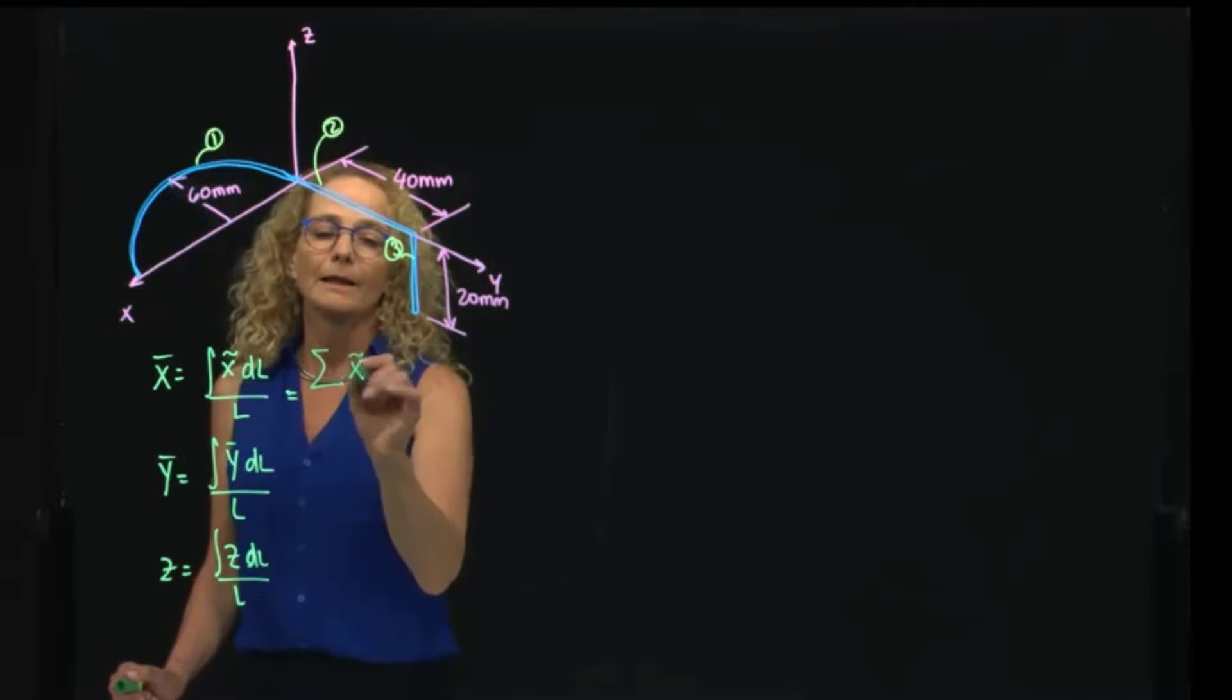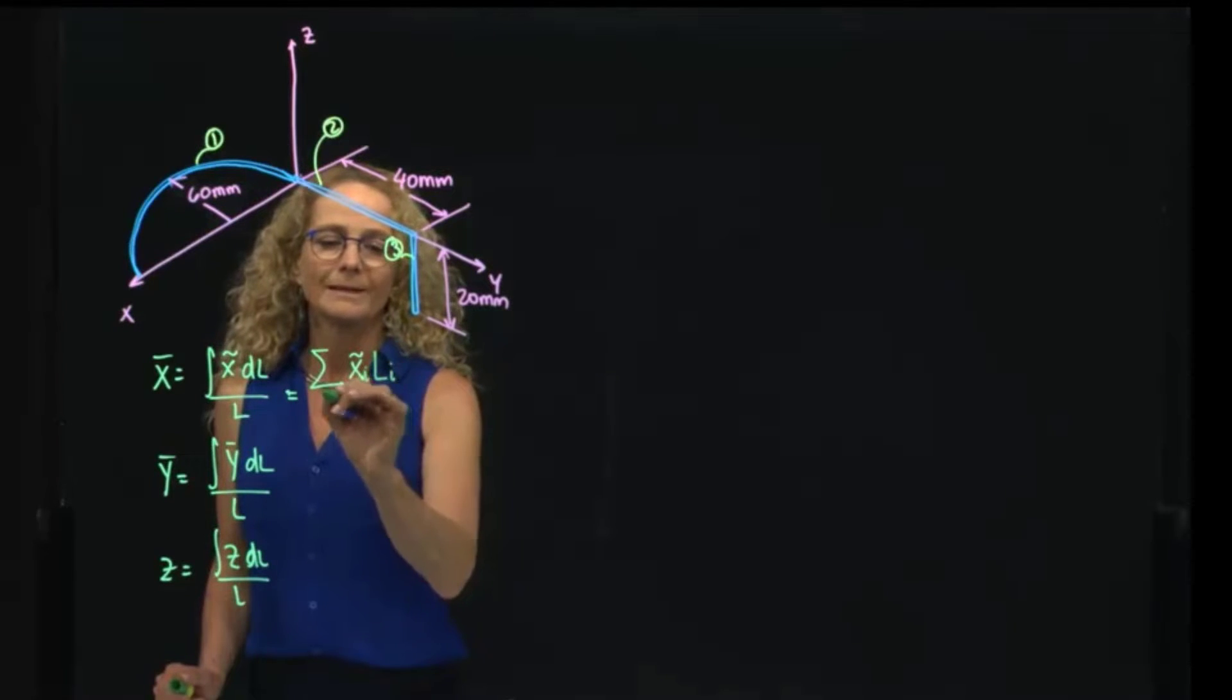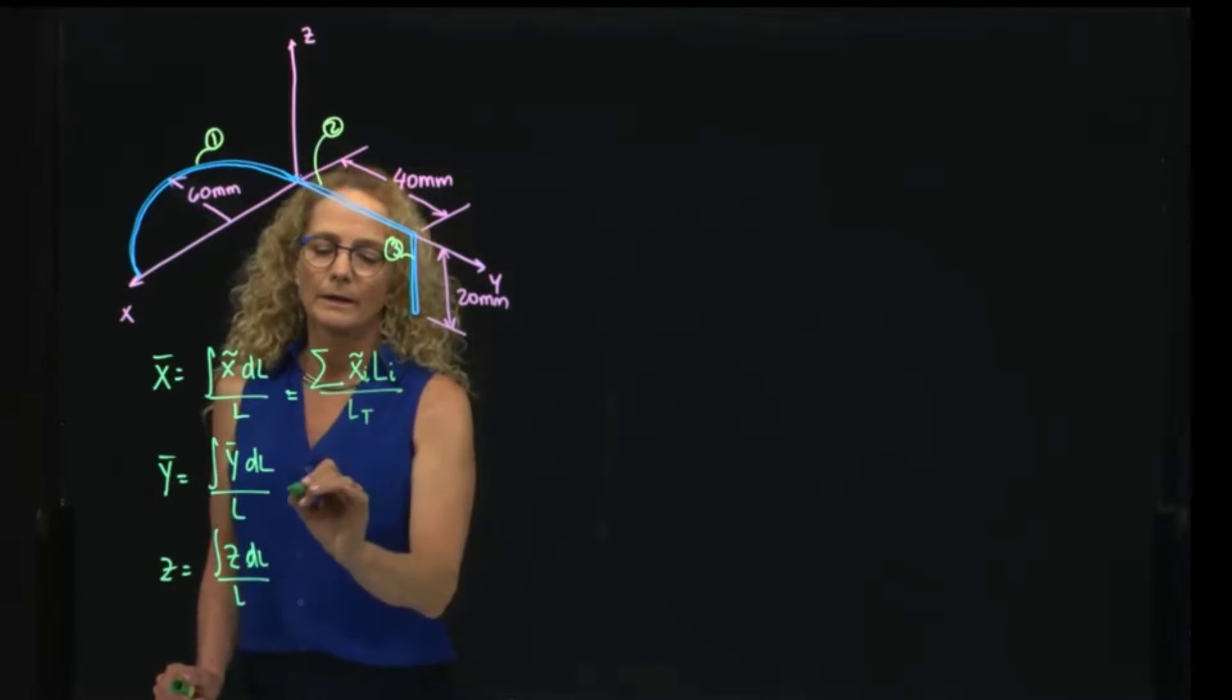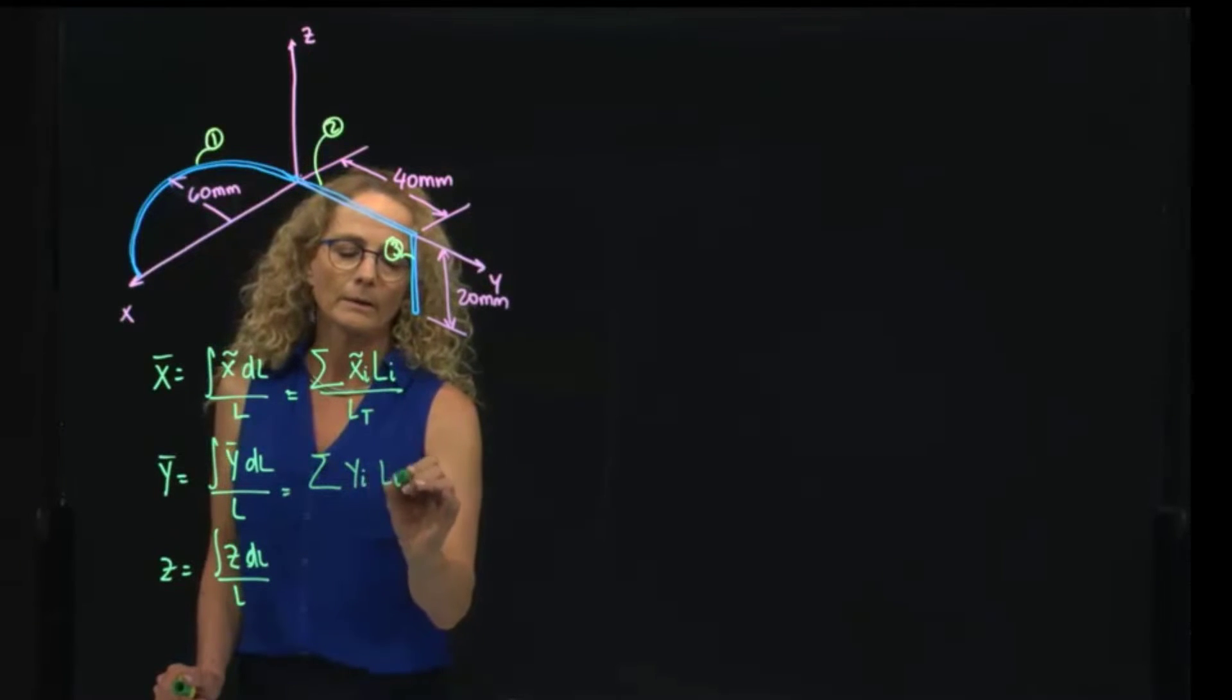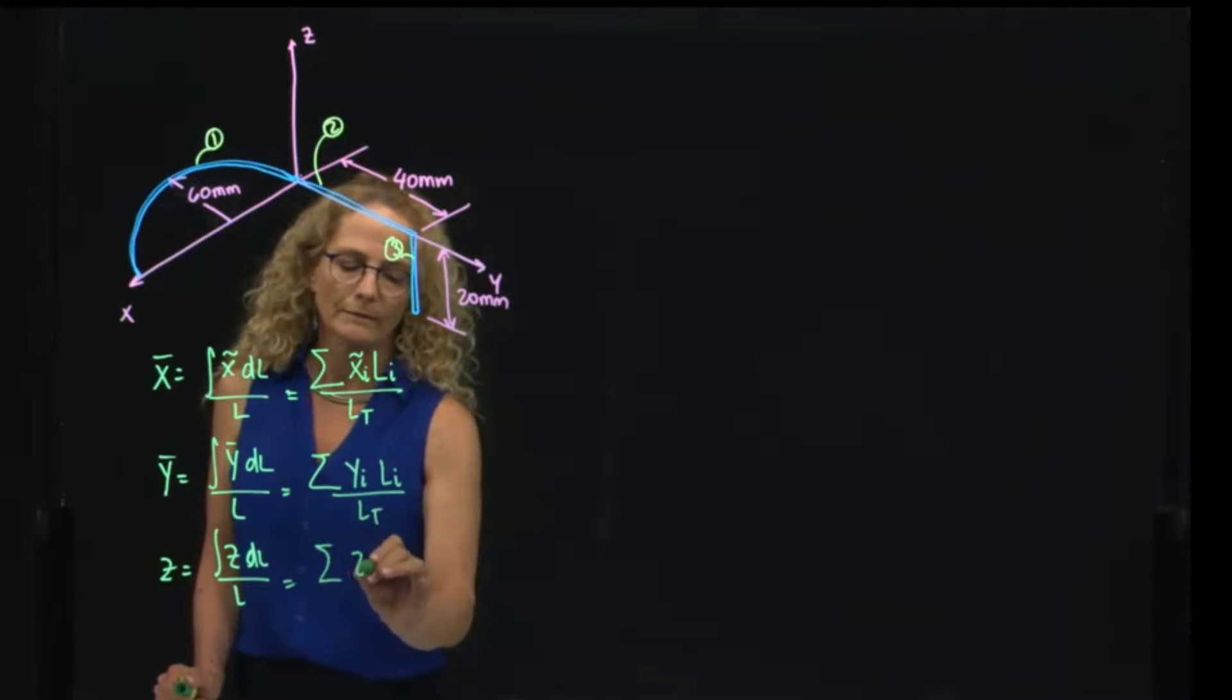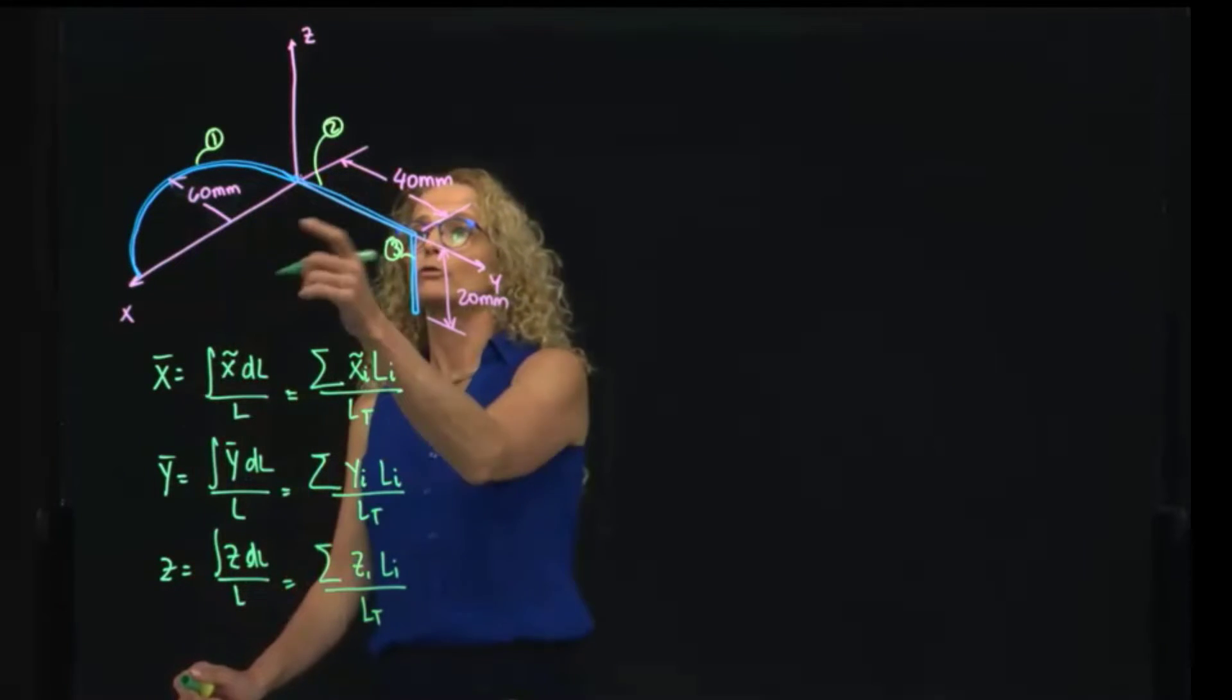That will be the centroid of the first part times the length of that part, divided by the total length. I will do the same for the y axis, and I will do the same for the z axis, where i goes from one, two, three.